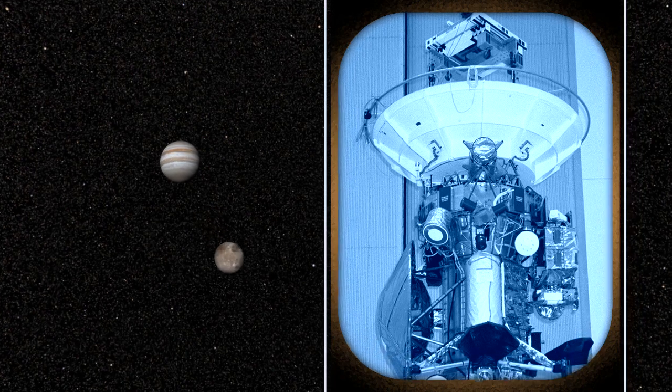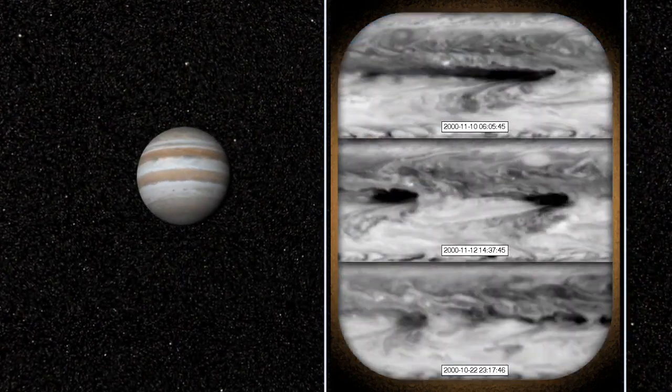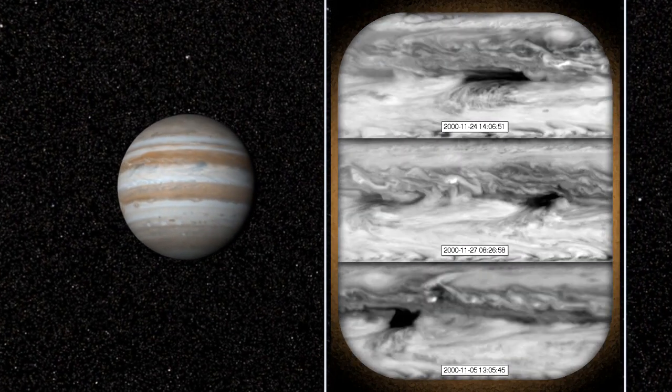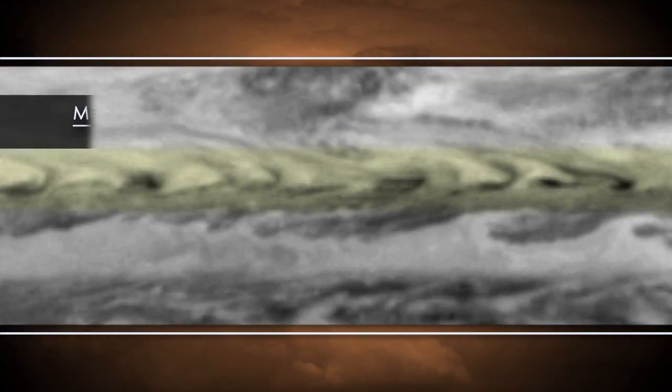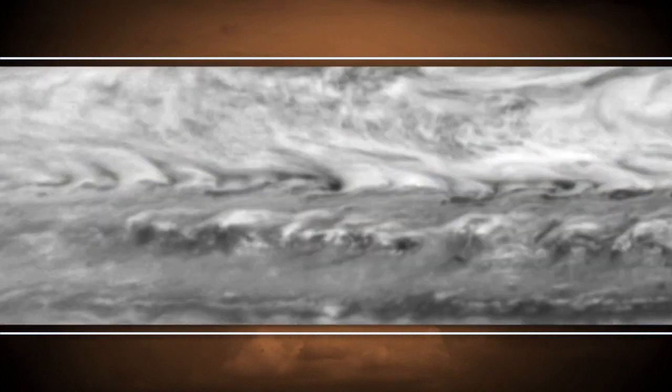In 2000, the Cassini spacecraft flew past Jupiter and created a series of still images that we compiled into time-lapse movies of Jupiter's atmosphere. Using these movies, we observed Rossby waves that caused north-south meanders in a jet stream south of the equator.